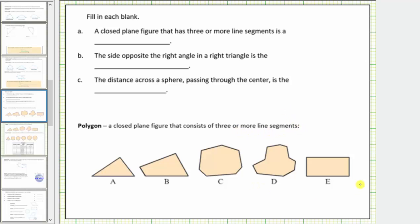Here are several examples of polygons. So for statement A, a closed plane figure that has three or more line segments is a polygon.